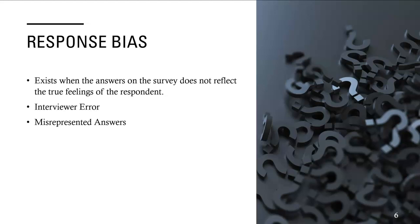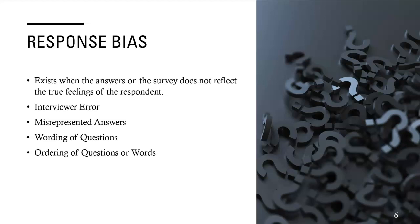Misrepresented answers can also happen — the answers might be exaggerated. For example, if you ask people how much money they make, they might exaggerate. Or if you ask about their ability to do push-ups or jumping jacks, in their head they might think they do a lot, but in actuality they may not. The wording of questions matters too — like when voting on ballot propositions, the wording can be so confusing you have to read it four or five times. The ordering of questions can also change people's responses, as can the type of question — open-ended versus closed-ended.